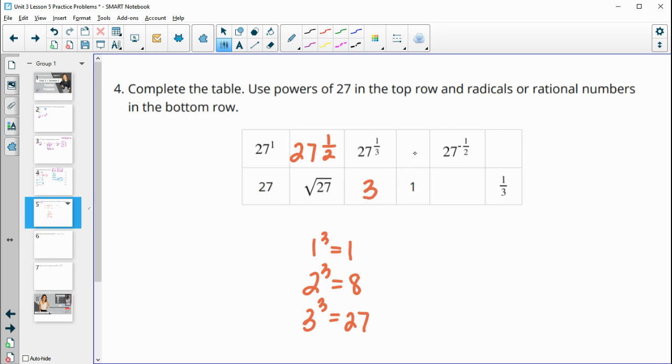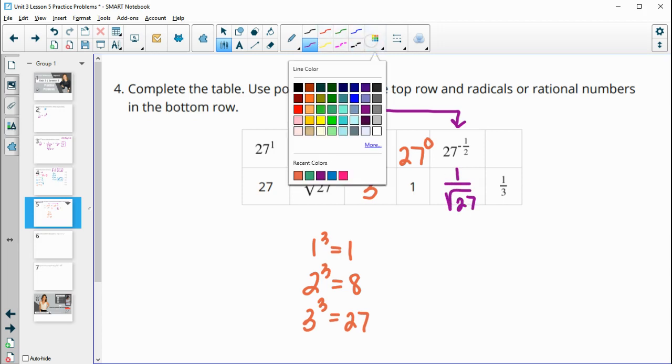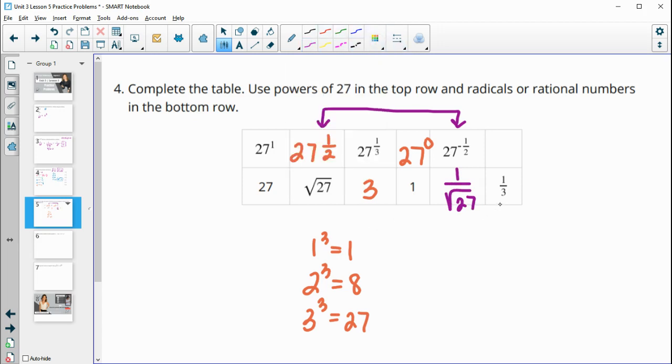And then 27 to what power would give us 1? Well, anything to the 0 power is 1. And then 27 to the negative 1 half power will be the reciprocal of 27 to the 1 half. So this is going to be 1 over the square root of 27. And then 1 3rd will be the reciprocal of 3. So then that will be the negative exponent of 27 to the 1 3rd. So this is 27 to the negative 1 3rd. So those are going to be reciprocals. We get reciprocals by doing the opposite sign exponent.